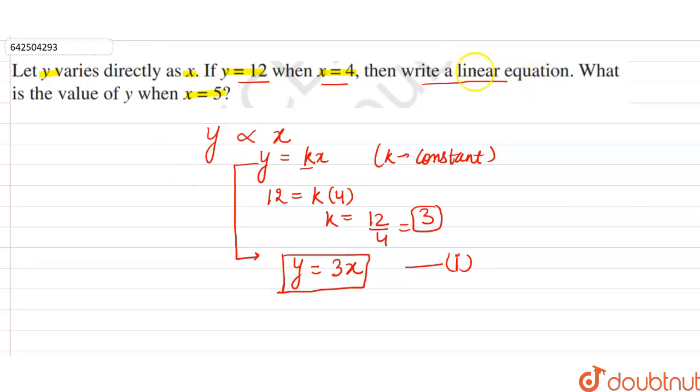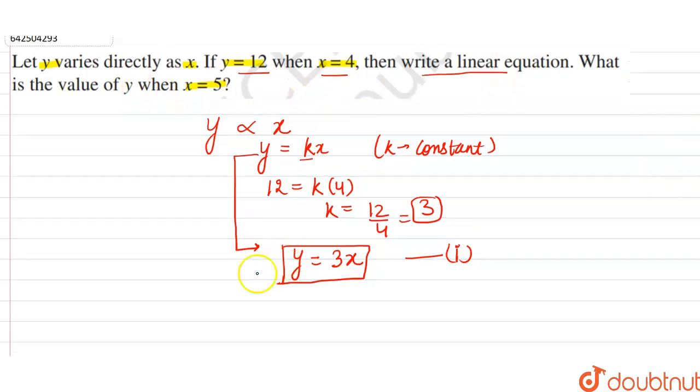Now in the question, what is the value of y when x is equal to 5. Now when we have to find the value of y, so y is equal to 3 times when x is equal to 5. So put the value of x is equal to 5. So y will be equal to 15.